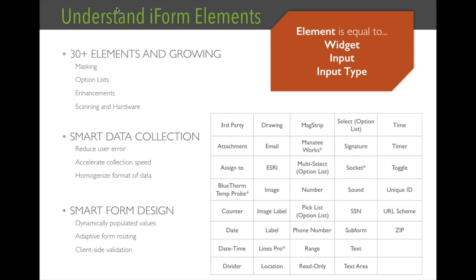Option lists are another critical element type. An option list is a set of valid inputs that the user is restricted to. For example, if I have a set of US states, I'll have an option list with each state listed so the user can't enter a different value. Without option lists, a user might type the state name, use uppercase, abbreviate, or even misspell it. By pre-defining values in an option list, you eliminate all of that potential error, and iForm Builder has a variety of elements that revolve around using option lists.